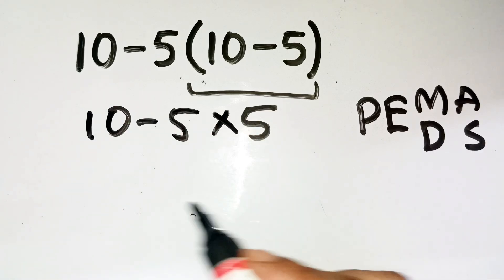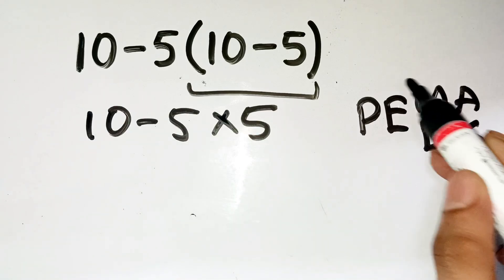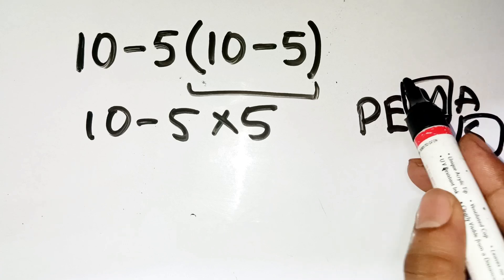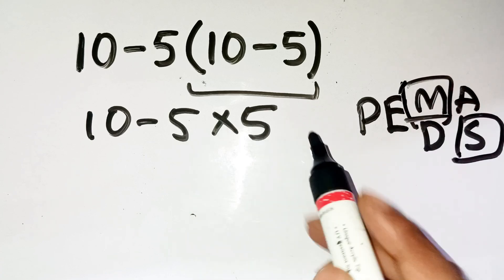Now, here's where people slip. According to PEMDAS, multiplication comes before subtraction. So we have to do 5 times 5 first. That gives us 25.